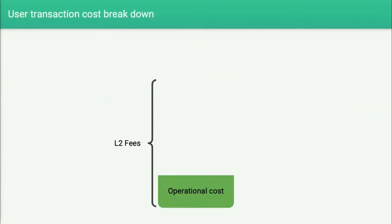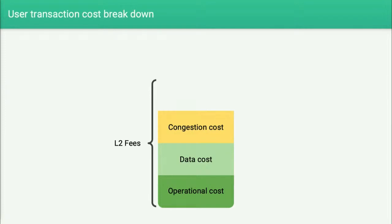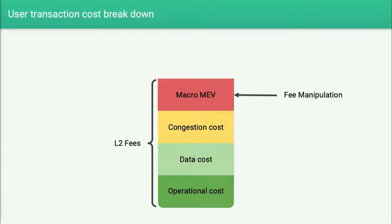Users are the key actor in the economic flow, especially when we look at economic properties such as real-time censorship resistance and rent resistance. Breaking down the costs a user incurs when sending a transaction on L2: the user pays L2 fees that include operational costs paid to the operator, data costs paid to L1 when data is posted, a congestion cost from the L2 congestion fee for efficient resource allocation, and what I call macro MEV — the MEV the operator can extract by manipulating fees.